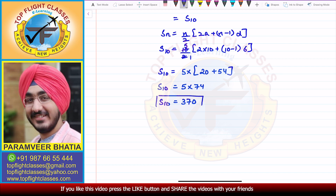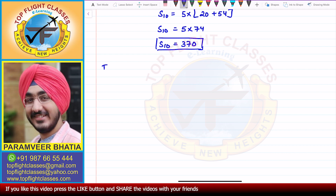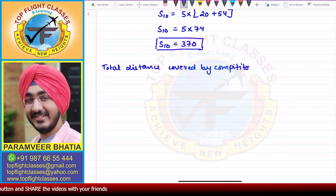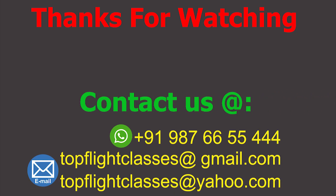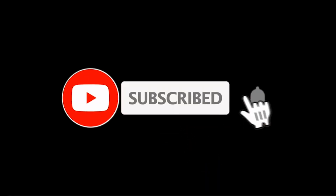So S10 is 370, and the total distance run by the competitor is 370 meters, which is what is required in this question. Thanks for watching the video. For any doubt regarding this video or any other topics, you can contact us on email or WhatsApp as shown on the screen. Please like, comment, and share this video. Subscribe to the channel Top Flight Classes and click on the bell icon so you do not miss any updates.